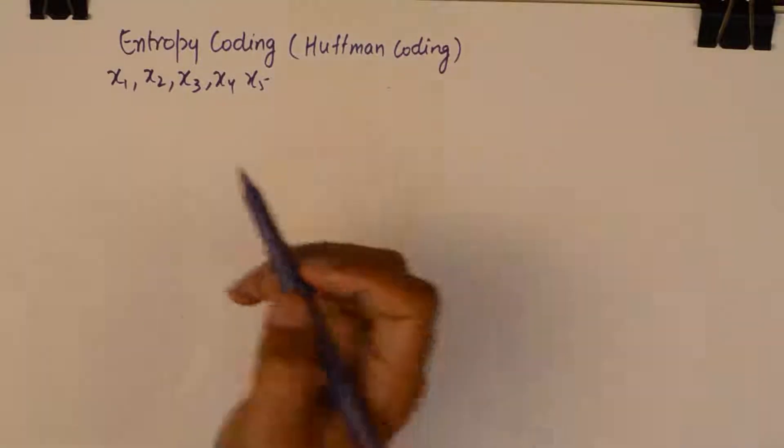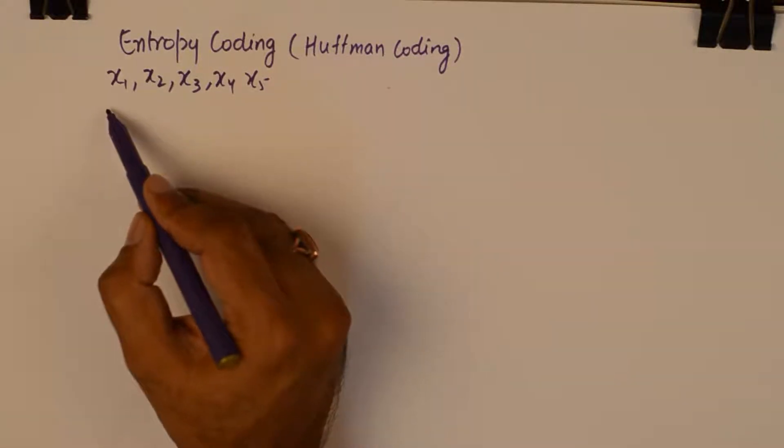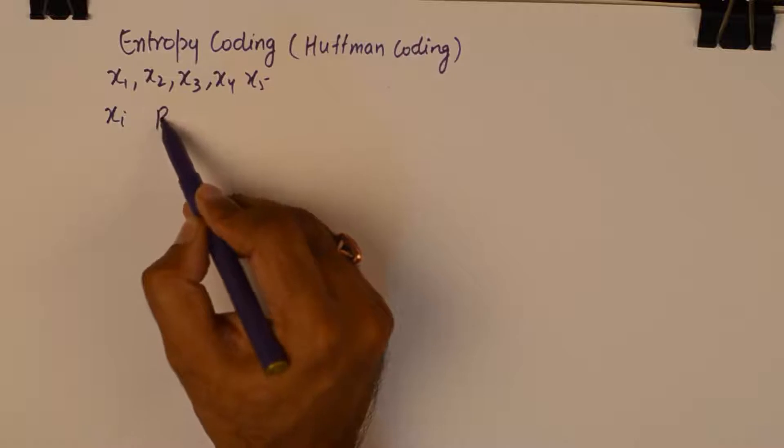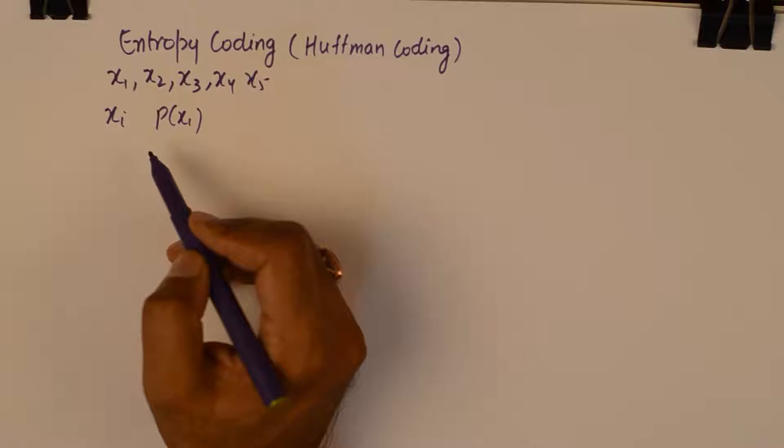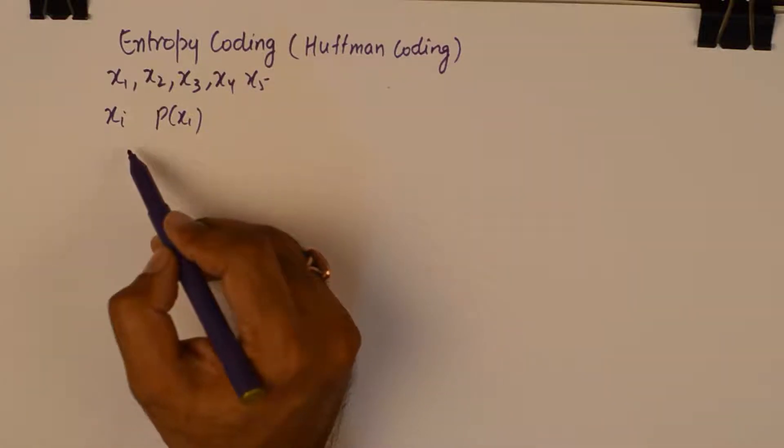Just like in the case of Shannon Fano coding, we will keep the first column as xi, the next column will be the probability of xi. Then I will discuss the next steps as we move forward.